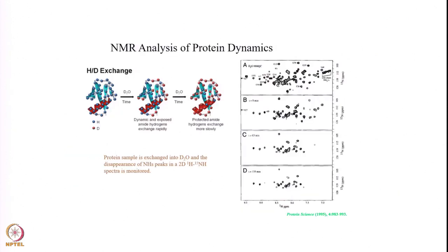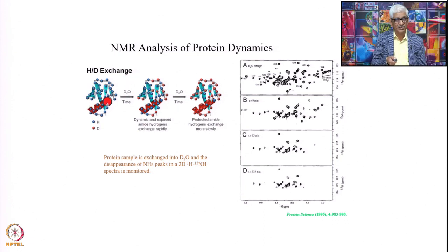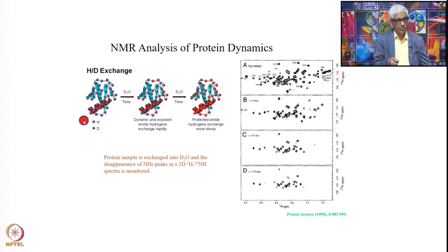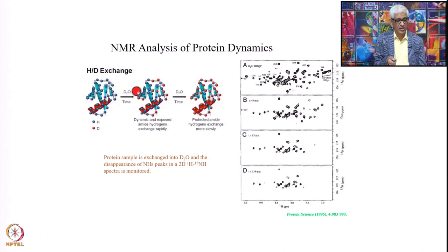Suppose you have HD exchange. You have a protein with a helix and various beta sheets, and there are a lot of protons. The red ones are deuteriums and the others are protons. If you put D2O to a solution, initially all the protons are in the H state. You can lyophilize it — make it dry powder — then it is all H. Now dissolve it in D2O. The ones which are on the surface will exchange immediately. You monitor as a function of time.